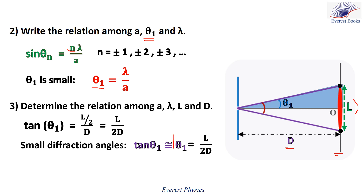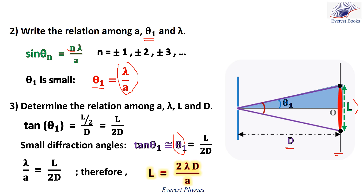Replacing theta 1 by lambda over A, we get lambda over A equals L over 2D. Therefore, L equals 2 lambda D over A. This is the relation among A, lambda, L, and D.